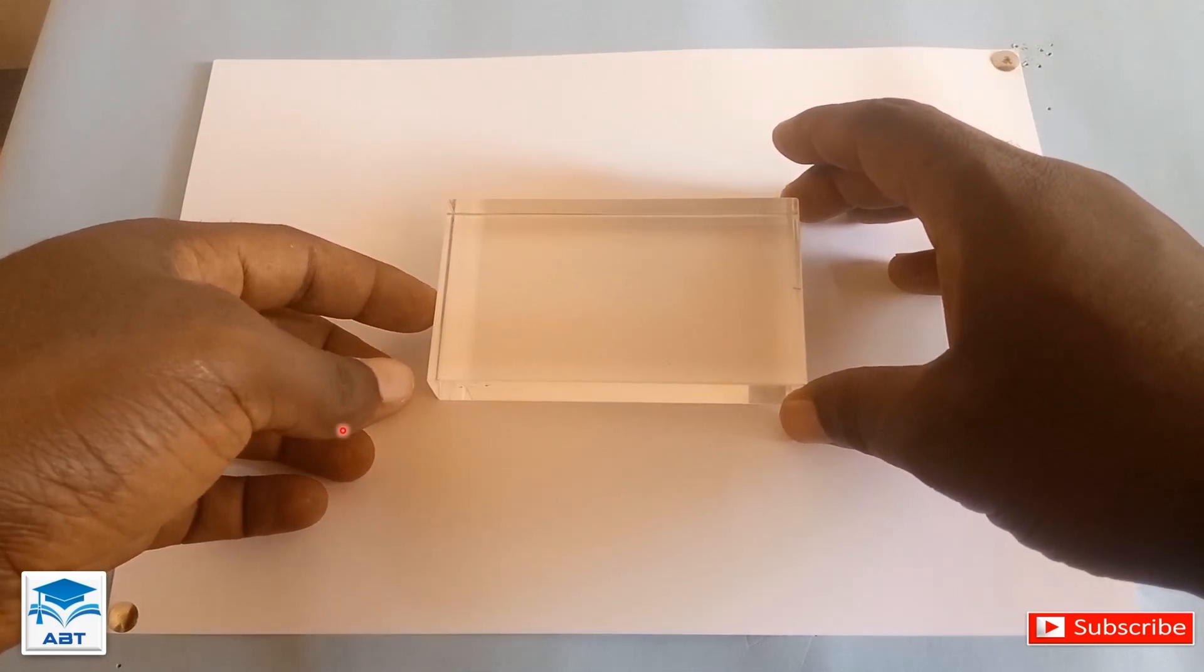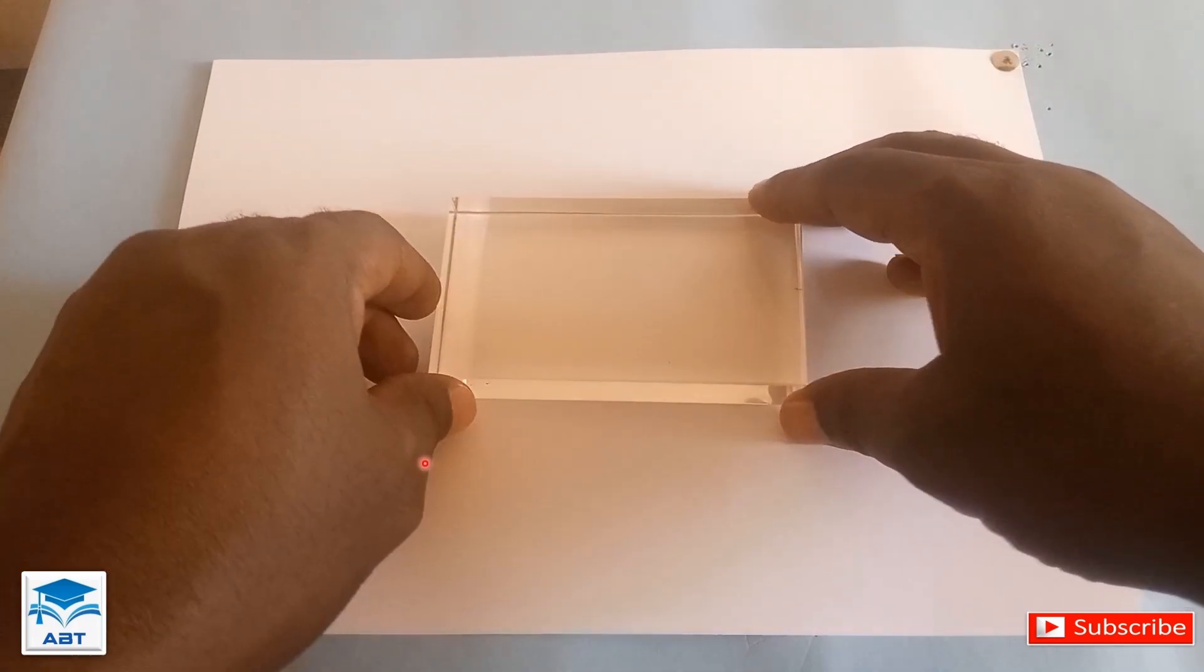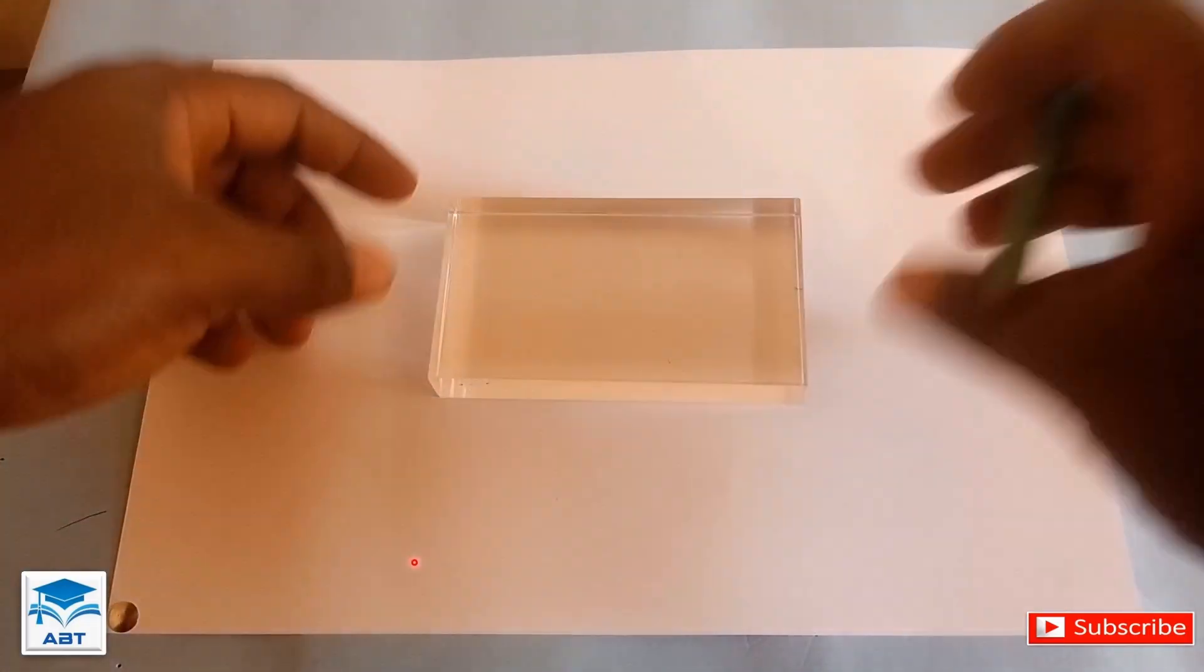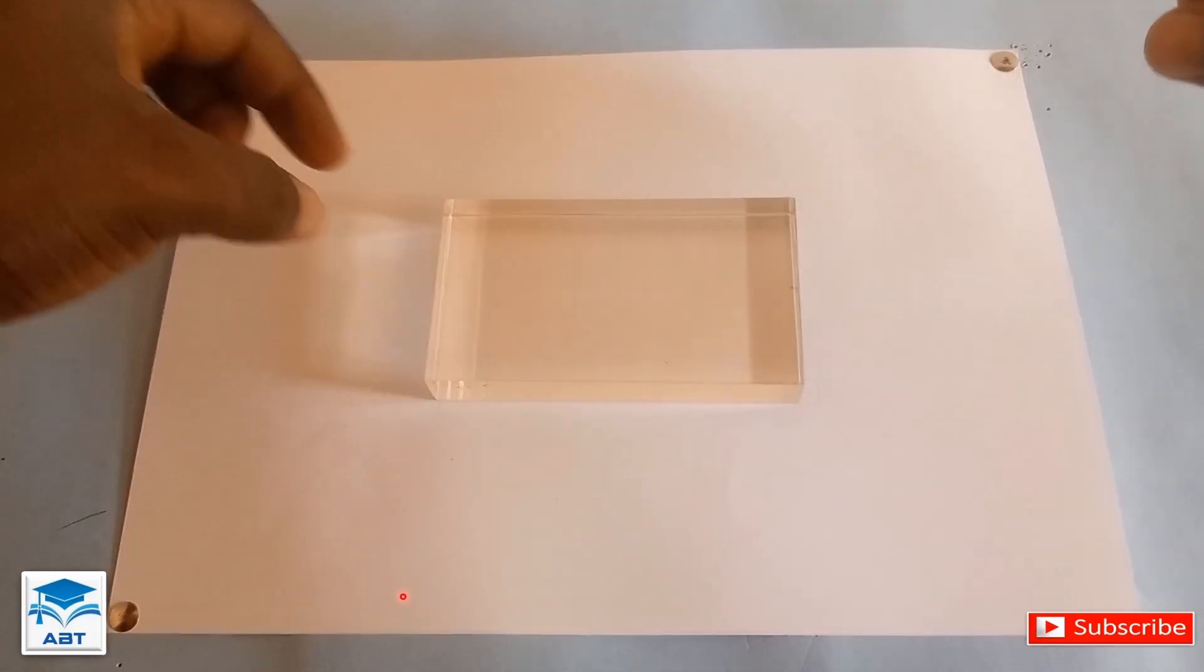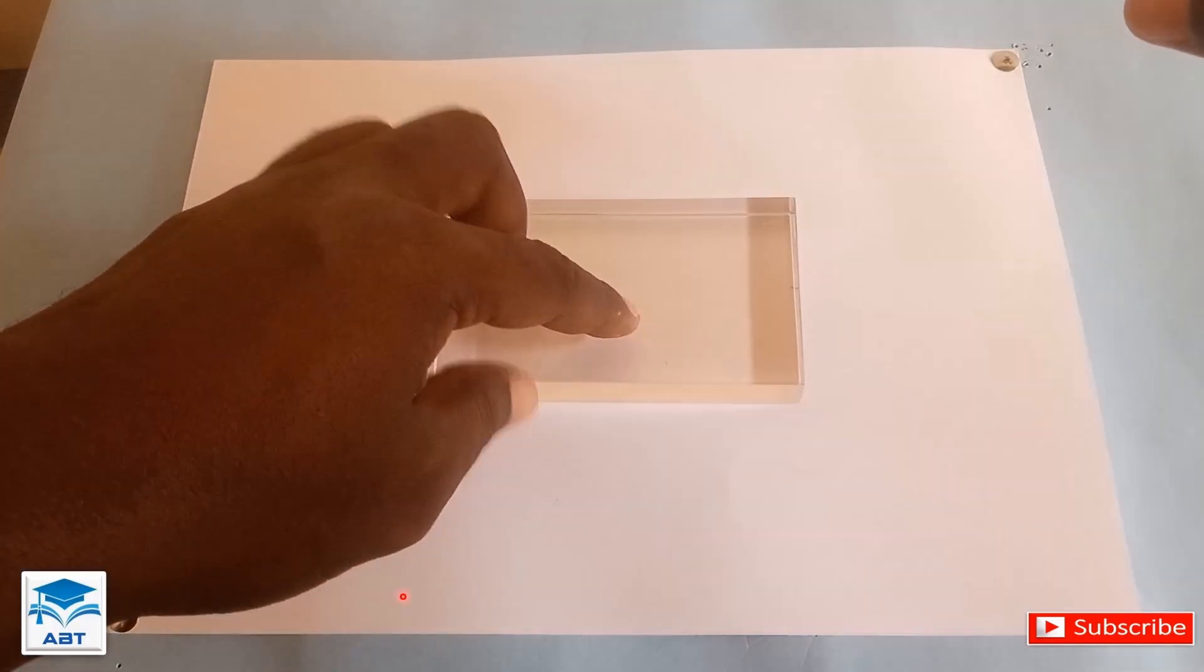And we place the rectangular prism in the center of the drawing sheet and trace the outline with a pencil.